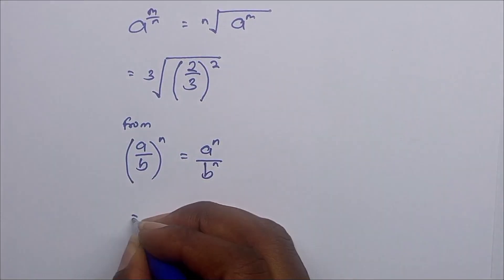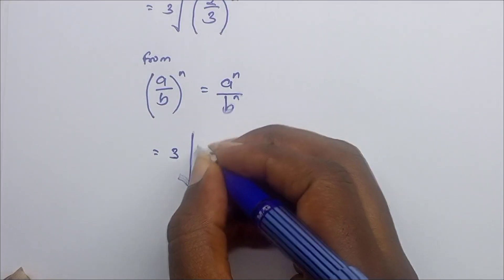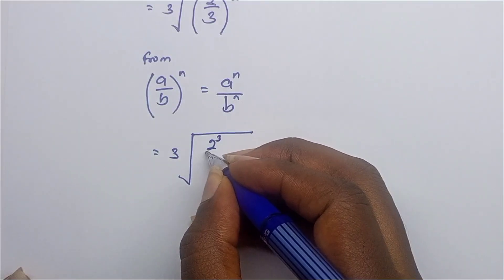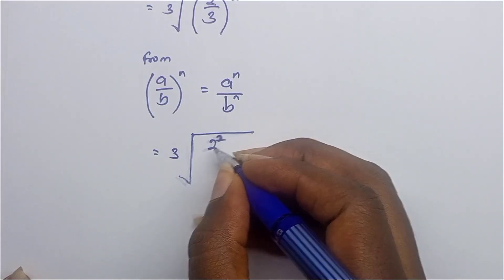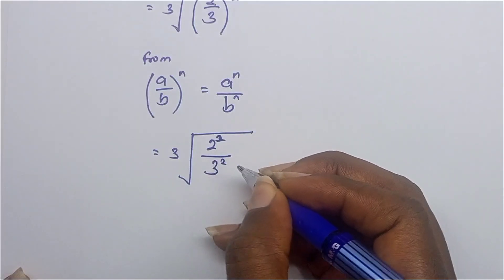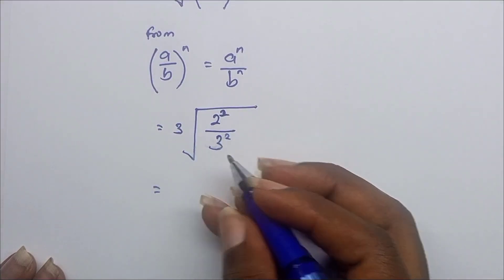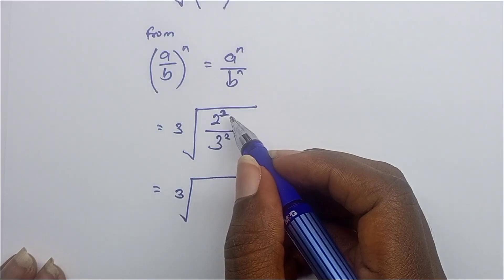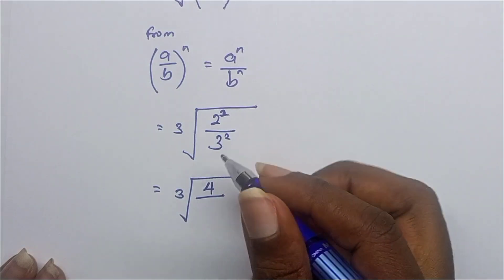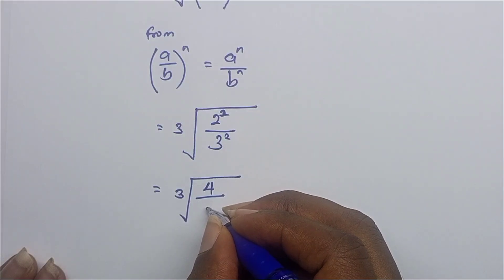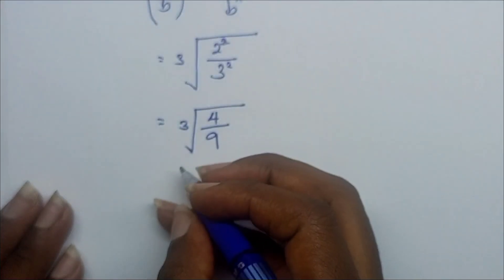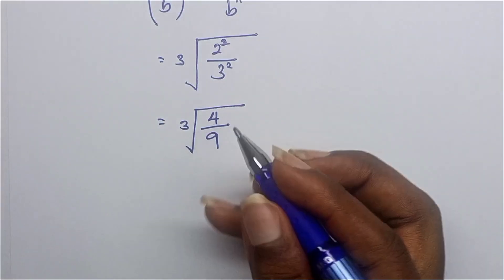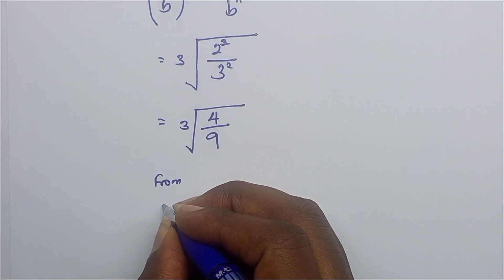Applying this, we get the cube root of 2 to the power 2 over 3 to the power 2. So this equals the cube root of 4 over 9, since 2² = 4 and 3² = 9.